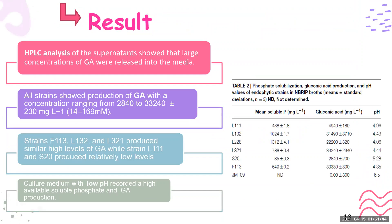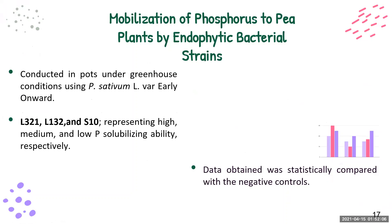The results obtained from this experiment clearly show a direct correlation between concentration of gluconic acid and soluble phosphorus, especially for strains L321, L228, and L132. Next, they studied phosphorus mobilization in pea plants under greenhouse conditions, and the data obtained was statistically compared with the negative control.